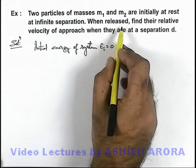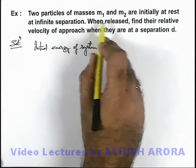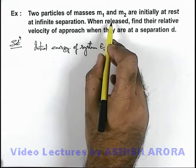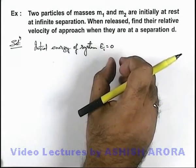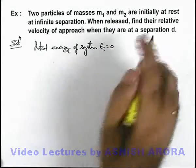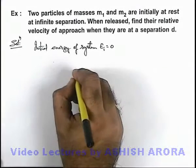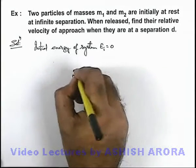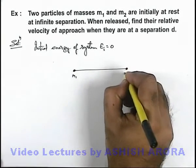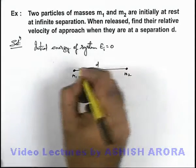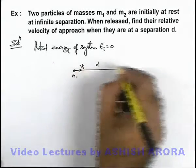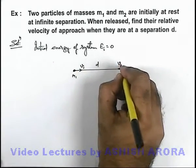When we release the particles, due to their mutual gravitational attraction, these are attracted towards each other. When they are at a separation d, say the situation is this: when the two masses are at separation d, say m1 is moving at speed v1 and m2 is moving at speed v2.